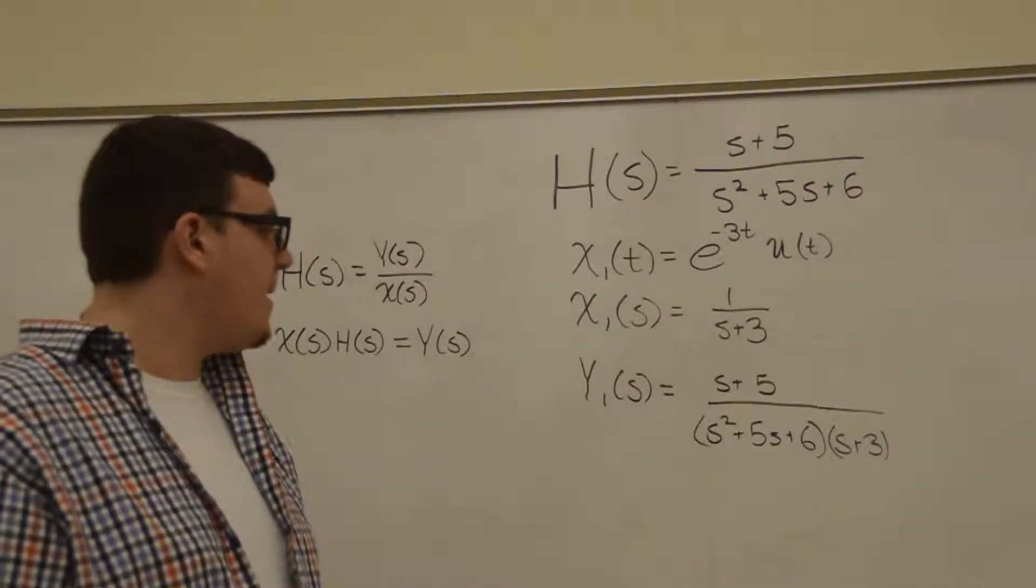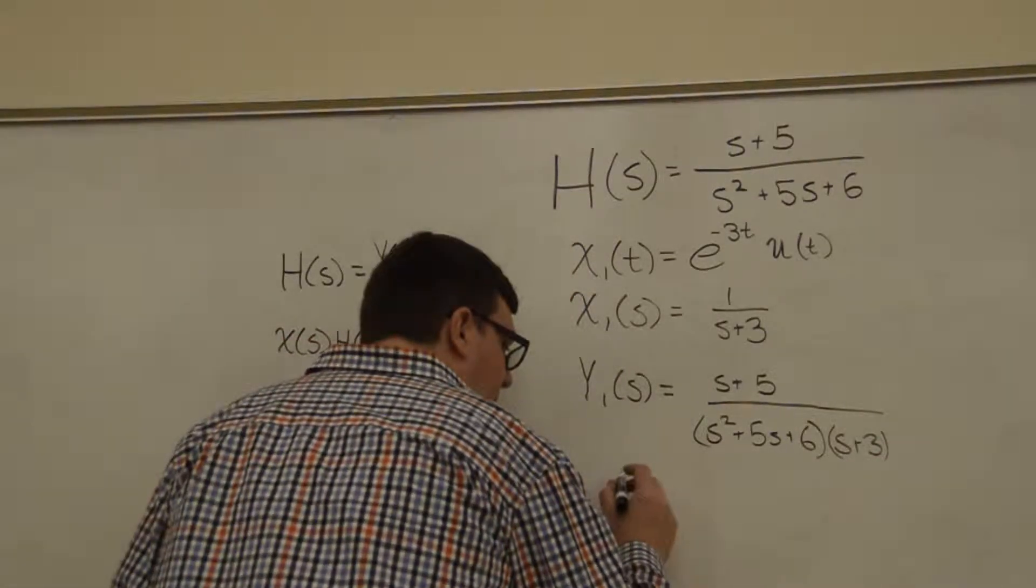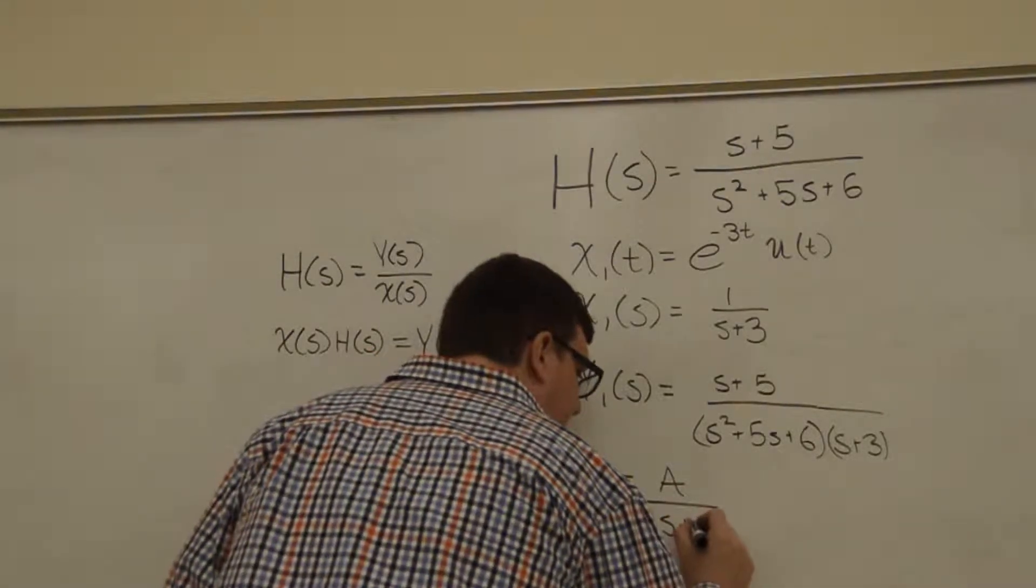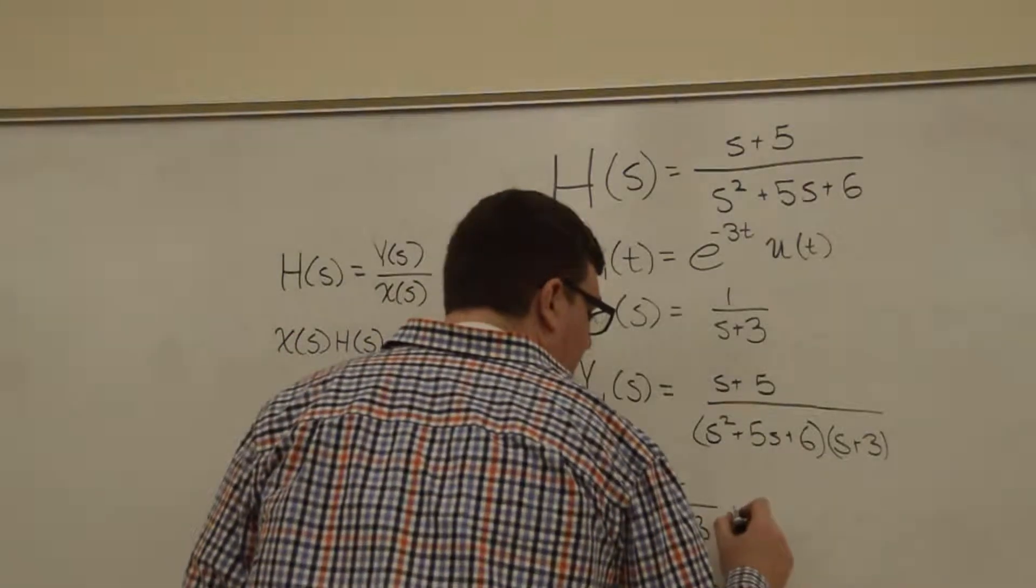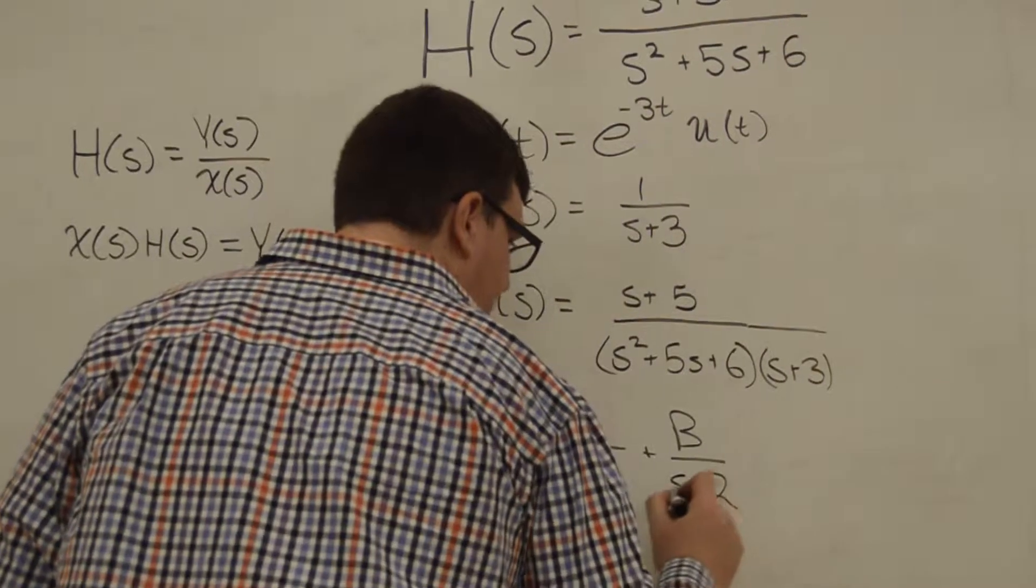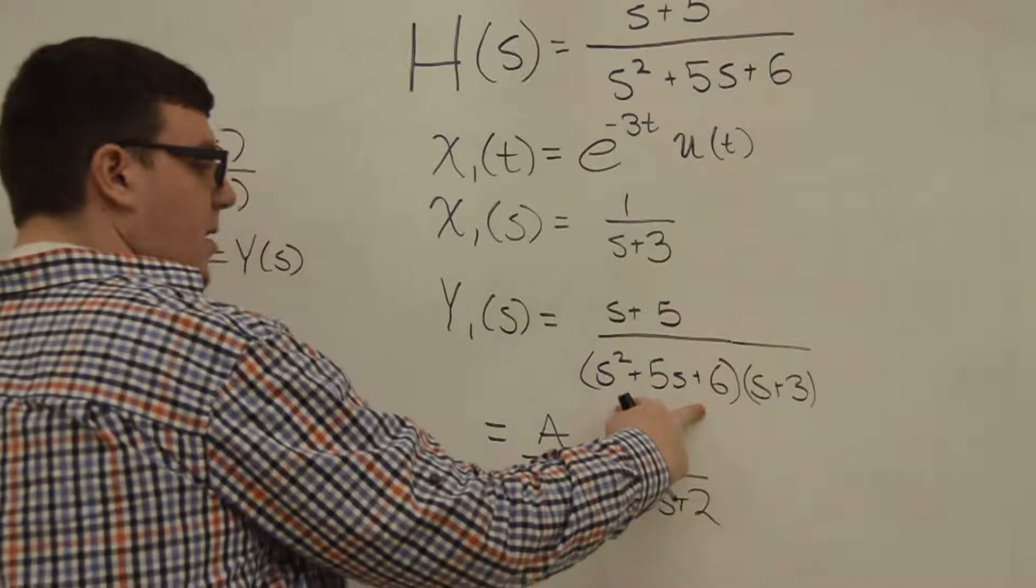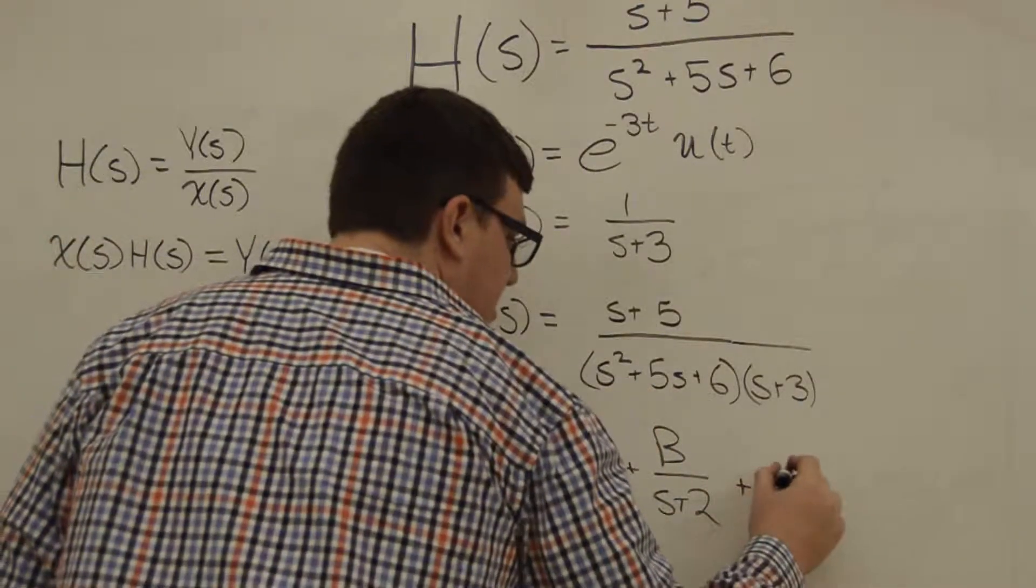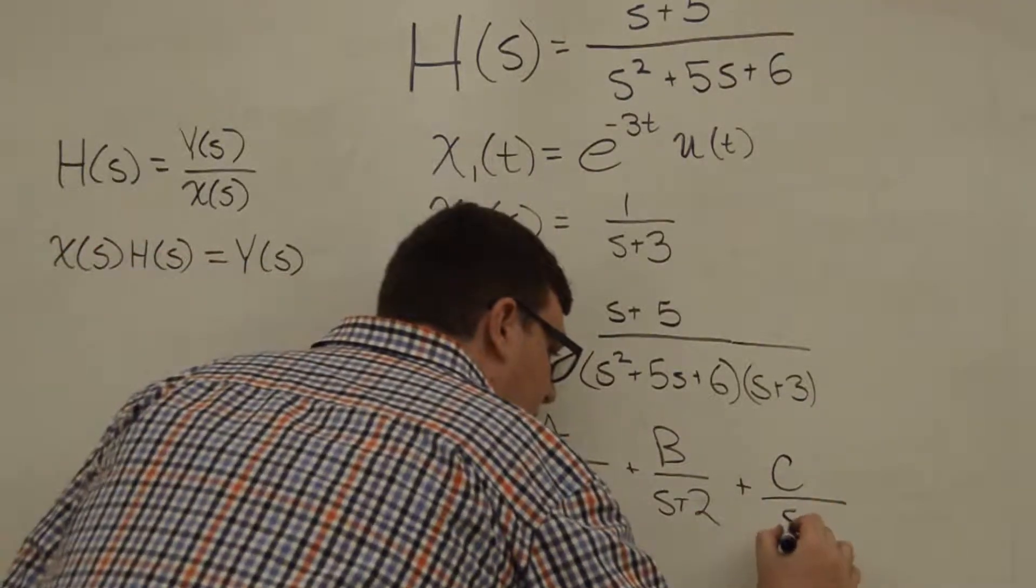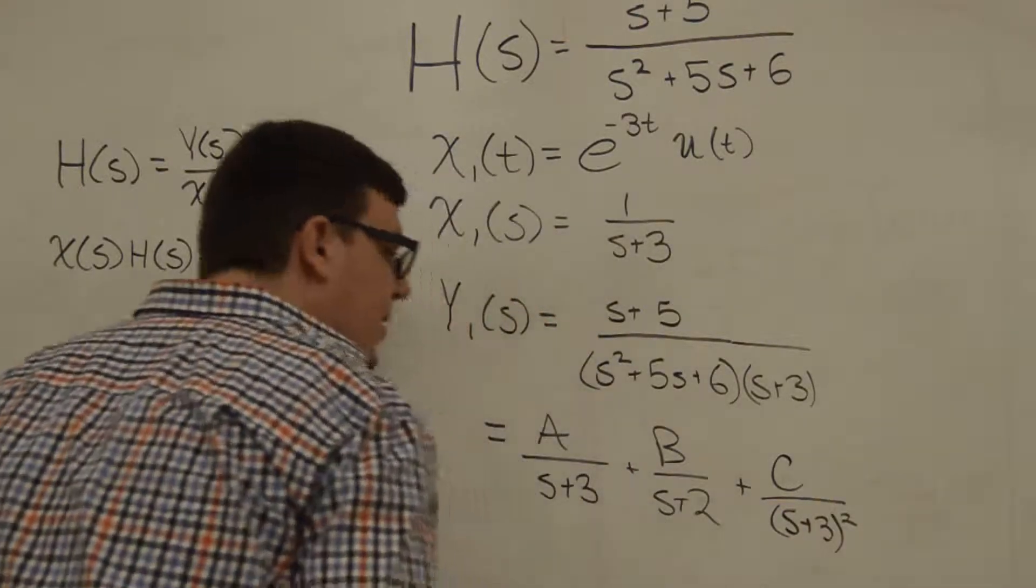So what we do is we use partial fractions, which means that we split this up into the form A/(s+3) plus B/(s+2), which is just (s+3)(s+2) equals this quadratic equation, plus C over, and because our input is also s+3, we have to have an (s+3)² term as well. So that's just the rules of partial fractions.